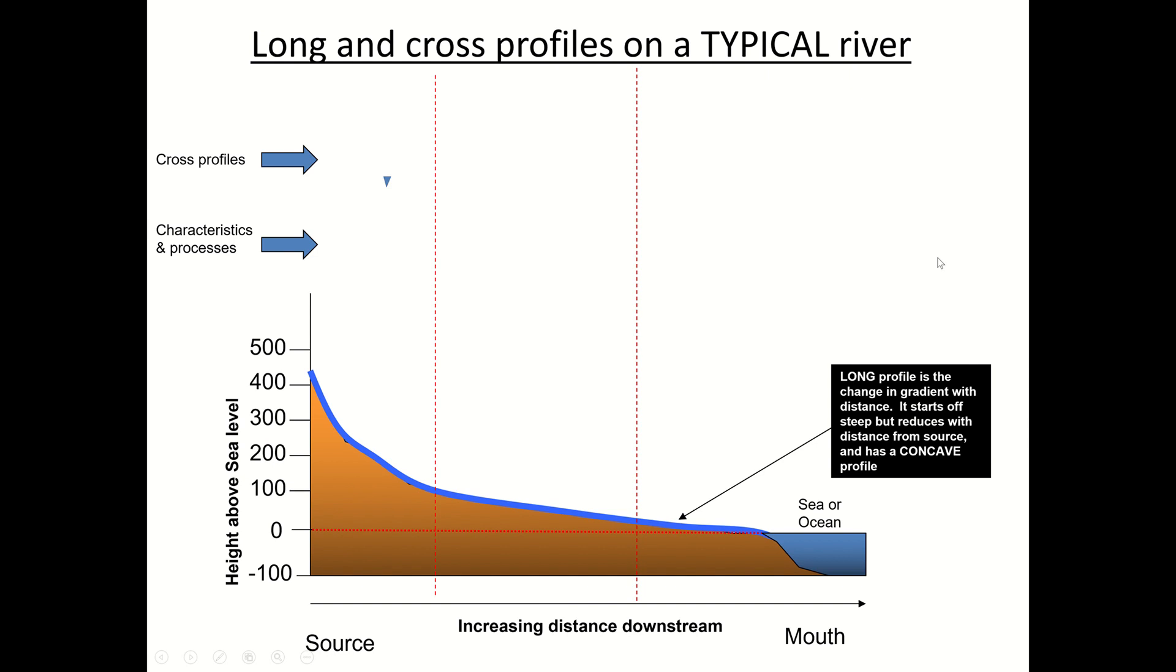The upper valley is where we find our V-shaped valleys. The reason for that is that the dominant process here is vertical erosion. The river uses a lot of its energy to cut down into the riverbed and it keeps the valley sides really steep. You will get some traction, that's the rolling of boulders along the bed, and saltation at high flow, and the load size will be angular.